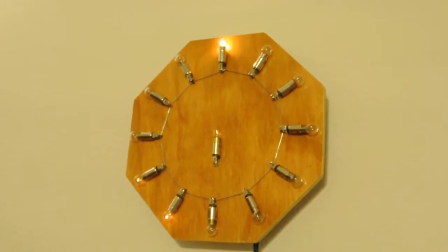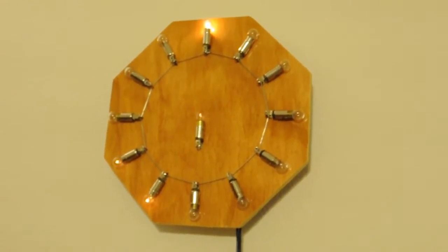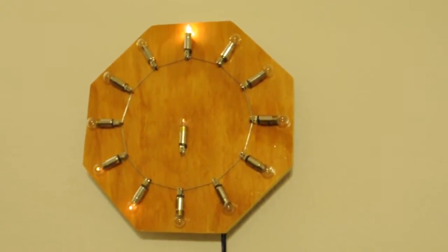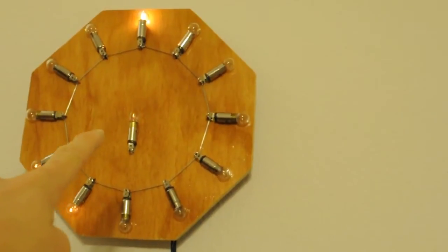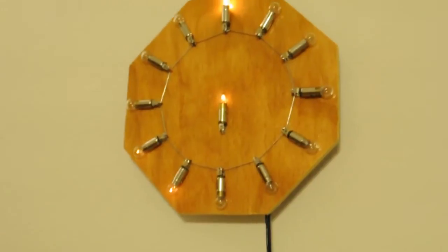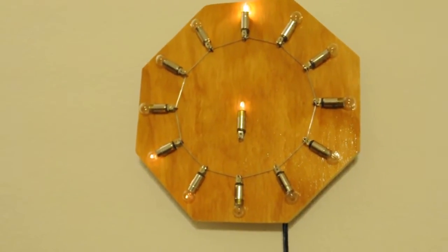And as you can see, it is now 1:37. The brighter light represents the hour, the dimmer lights represent the minutes, and the light in the middle representing the seconds fades in one second and fades out, and then fades in in one second.